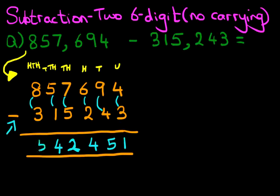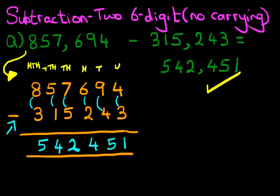And there we have it, nice and easy. The answer is 542,451. That is correct, so let's give it a nice big tick. So that is how we do subtraction of two six-digit numbers with no carrying using the vertical format.